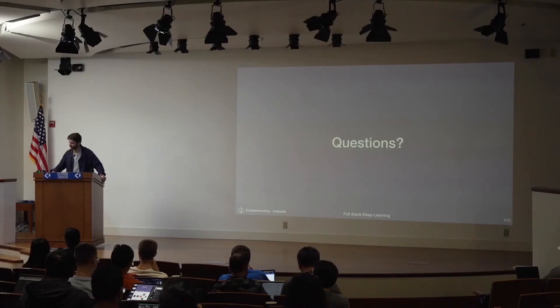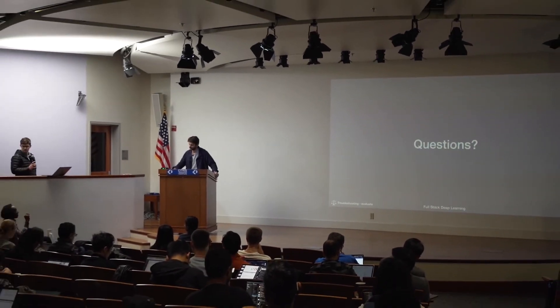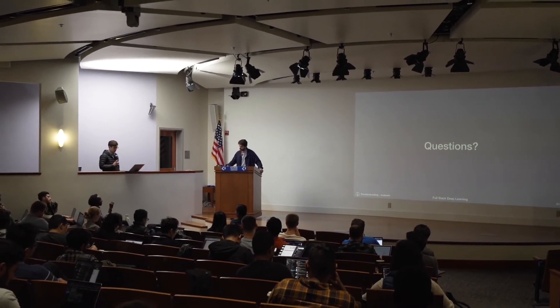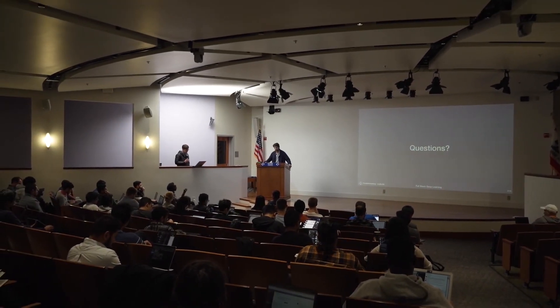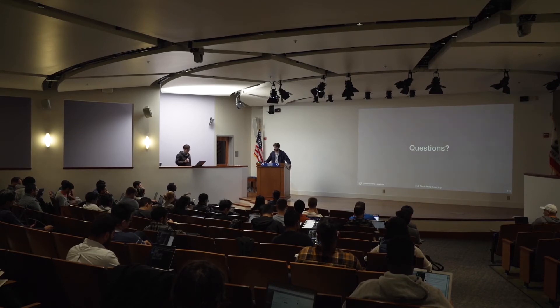Question from the last section: for all the different circumstances that could be preventing you from overfitting properly, do you preemptively guard against those and check for them, or do you check for them on an ad hoc basis? So how much should you proactively check for things like numerical issues or shape issues that could be causing you to not be able to overfit a single batch, versus how much do you just do that reactively? I think it's a hybrid. As you get more experienced, you'll have more examples where those issues have caused you pain in the past.